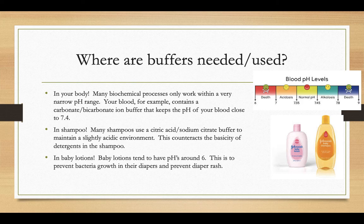In shampoos, many shampoos, if you read the ingredient label, a lot of them have citric acid in them or sodium citrate. They use the combination of the weak acid and its conjugate base as a buffer to keep your pH of your shampoo just a little bit on the acidic side. And it counteracts the basicity of the detergent that's in the shampoo to keep your hair clean.